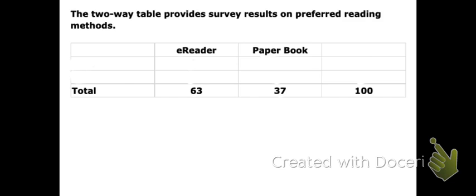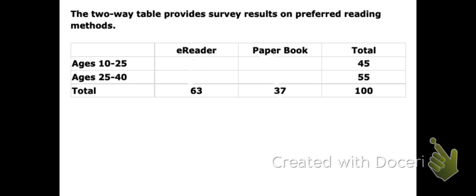In terms of the preferred reading method, 63 of the total 100 people prefer e-reading and 37 of the total 100 people prefer reading a paper book. Notice that 63 plus 37 equals 100. On the outside borders of our frequency table, we see the total 100 broken up into ages and also broken up into preferred reading method.